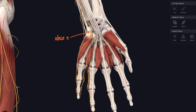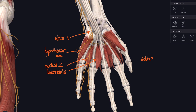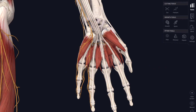At the wrist the ulnar nerve is quite superficial, passing over the top of the flexor retinaculum and into the hand. There it supplies all remaining small intrinsic muscles: the hypothenar muscles at the base of the little finger, the medial two lumbricals, adductor pollicis, flexor pollicis brevis, and the interossei between the metacarpals. Its sensory branches supply the ulnar side of the ring finger and the little finger.